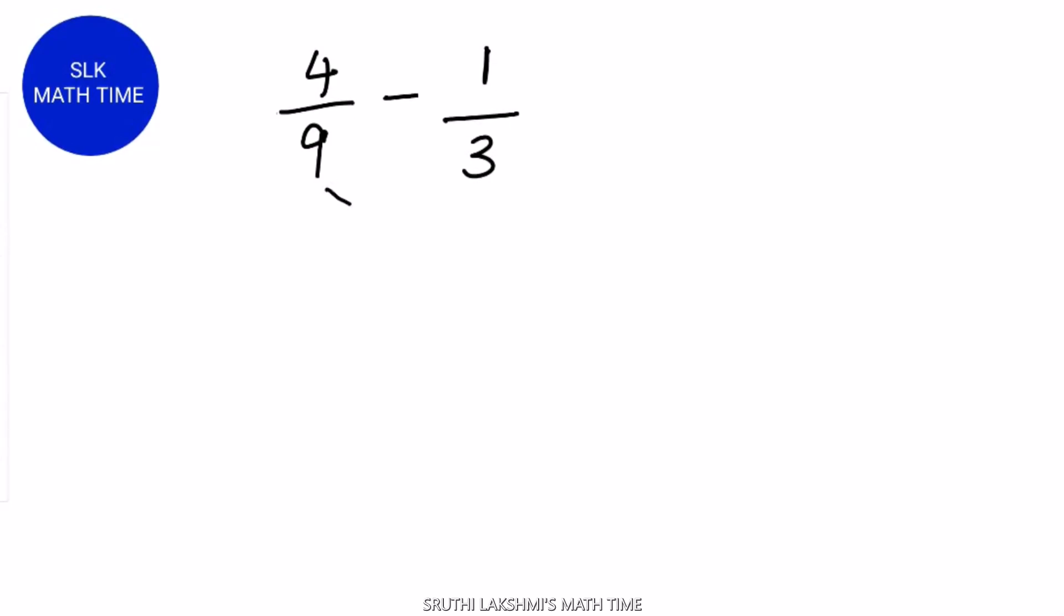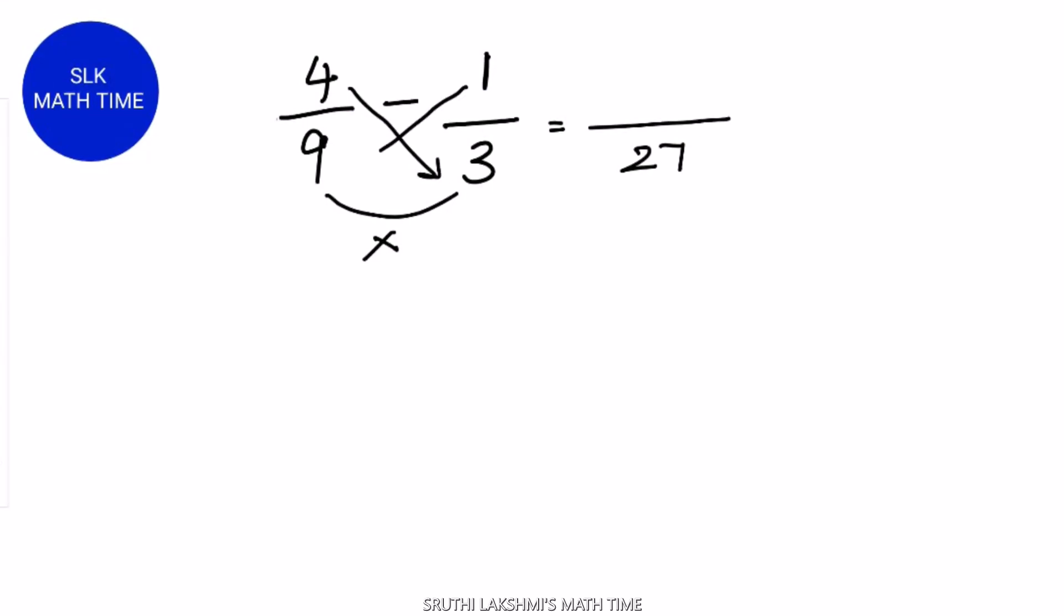First, multiply the denominators. 9 into 3 is nothing but 27. Next, cross multiply 4 into 3 and 1 into 9. 4 into 3 is 12 and 1 into 9 is 9.